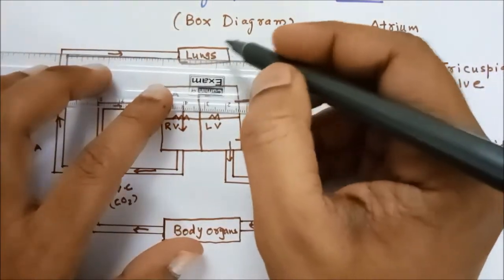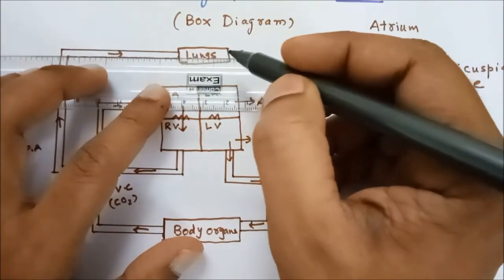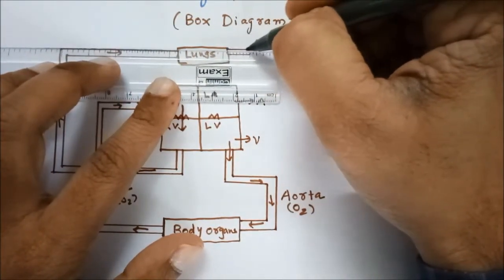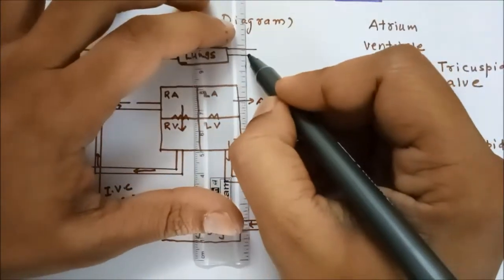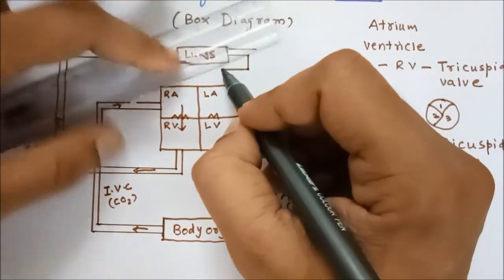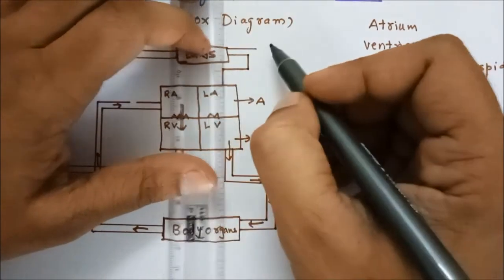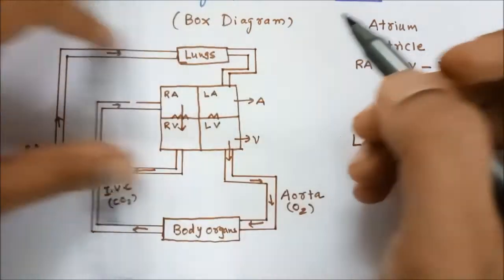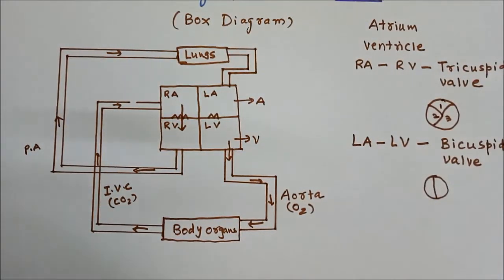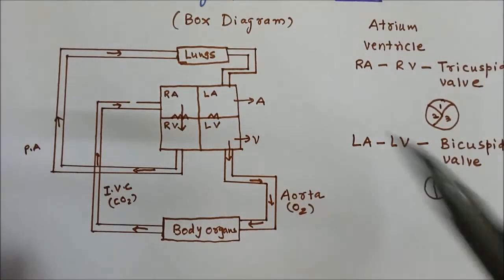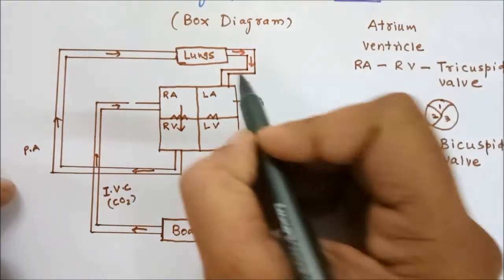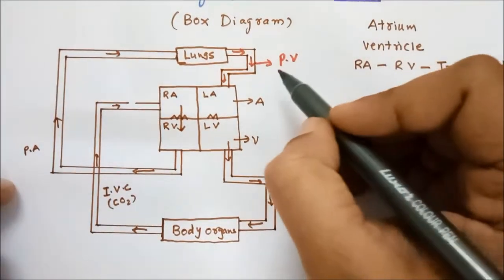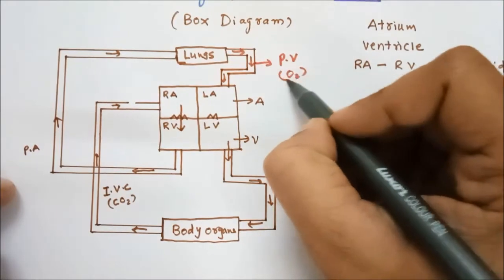The lungs filter the blood — they remove the carbon dioxide and add oxygen. That oxygenated blood finally reaches the left atrium. The blood vessel carrying oxygenated blood from the lungs to the heart is called the pulmonary vein, and it contains oxygenated blood.